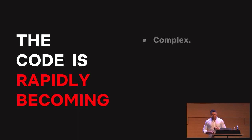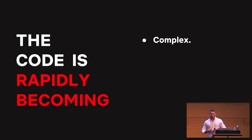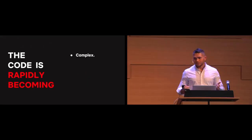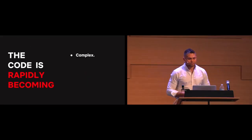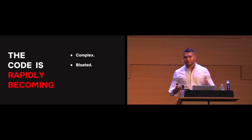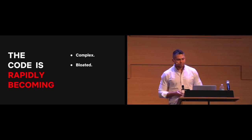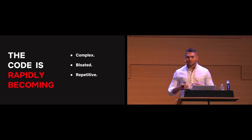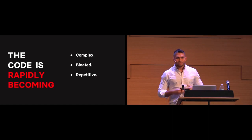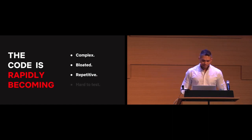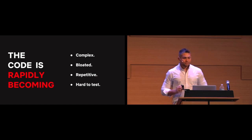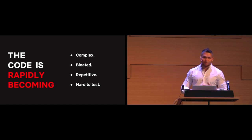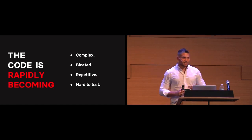So the code is rapidly becoming complex. Our play, pause, and stop functions are not actually focusing on what they're supposed to be doing — they are checking for the state and validating business rules instead of focusing on playing, pausing, or stopping the video. It's bloated: we added a bunch of code and we didn't get any functionality. It's repetitive: we keep checking for the state and raising exceptions. And it's definitely hard to test. With only two flags, imagine the moment you want more flags for different states.